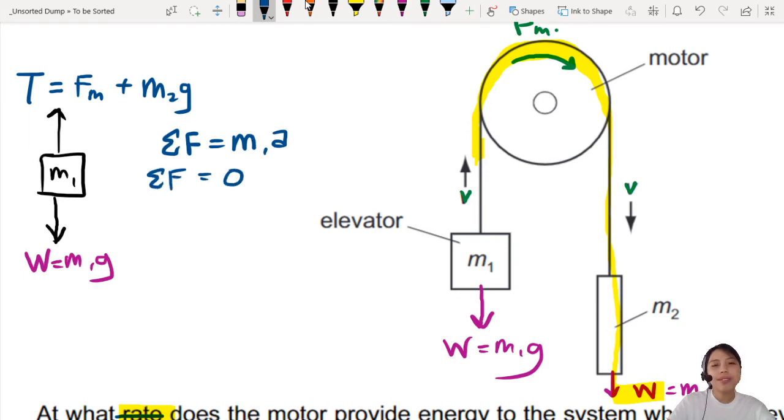So that means all the forces... You can just write it in this way. All the upwards forces equals to all the downwards forces. Because acceleration is zero. Very nice.